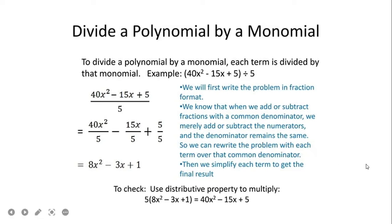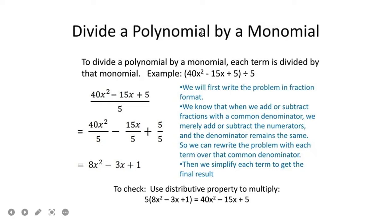So how do we divide a polynomial by a monomial? When we say monomial, that involves only one term. And when we say polynomial, that involves many terms — more than two terms. So when we divide a polynomial by a monomial, each term is divided by that monomial. For example, 40x squared minus 15x plus 5 is a polynomial, and 5 is a monomial because we only have one term.